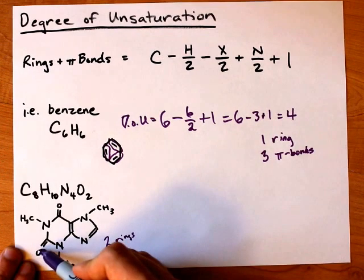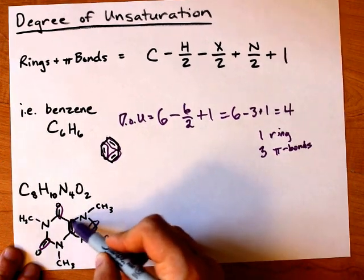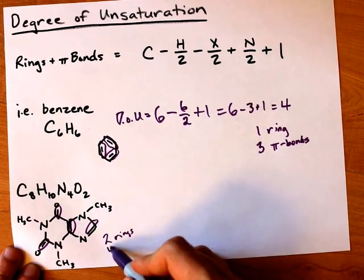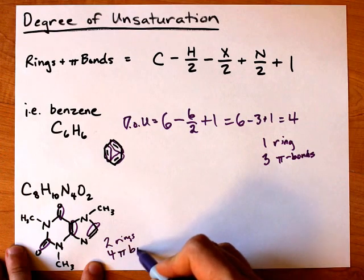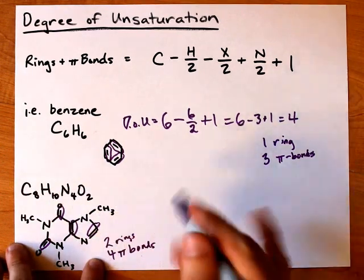How many pi bonds do we have? We have one here, one here, one here, and one here. That makes four pi bonds. So I'm guessing that our degree of unsaturation should come out to six.